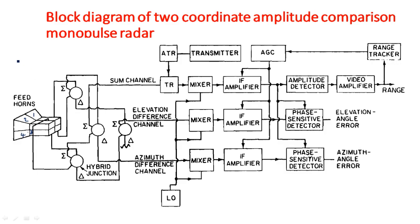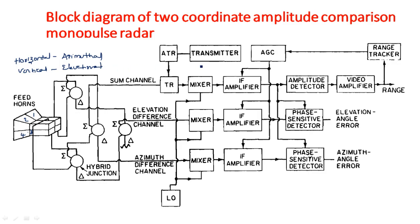The two angles covered are: horizontal, which is azimuthal, and vertical, which is elevational. Two feeds work for the azimuthal direction and two feeds work for the elevation direction.